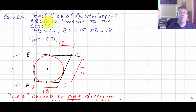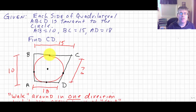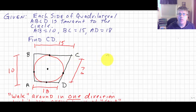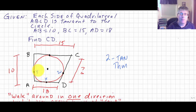Each side of quadrilateral ABCD is tangent to the circle. I have a black quadrilateral — a four-sided figure — with a circle inscribed inside it, tangent at each one of the points. That means from B or C to the tangent points, we have the two tangent theorem going on. If I label these tangent points W, X, Y, and Z, then DW is congruent to DX, AX is congruent to AY, and BY is congruent to BZ because of the two tangent theorem.